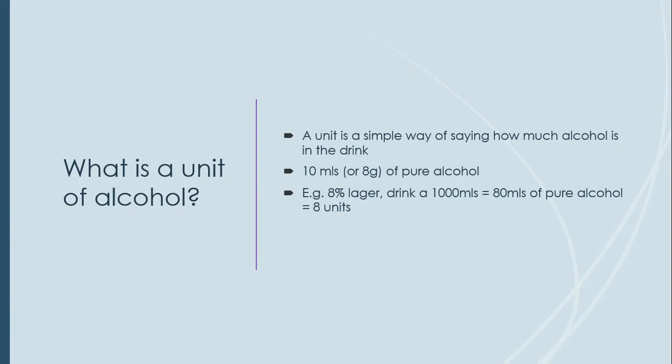So if I drink 8% lager and I drink 1,000 mils of this lager, to work out how much pure alcohol there is I need to work out 8% of 1,000 mils, which equals 80 mils of pure alcohol. As already mentioned, 10 mils is defined as one unit, so 80 mils is equal to 8 units.